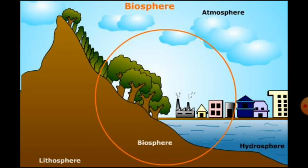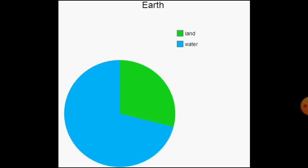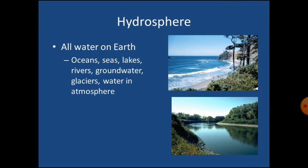The earth is called the blue planet. More than 71% of the earth is covered with water and 29% is with land. Hydrosphere consists of water in all its forms — as running water in oceans, rivers, and lakes, ice in the glaciers, underground water, and the water vapor in the atmosphere.